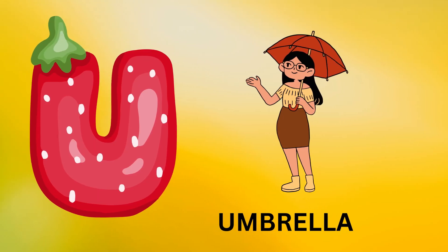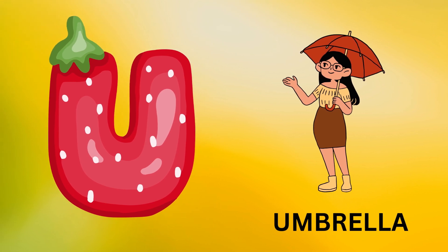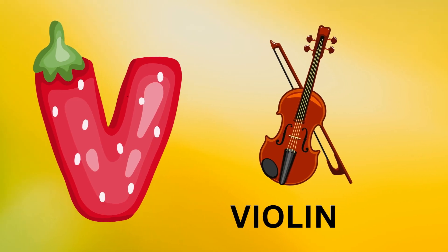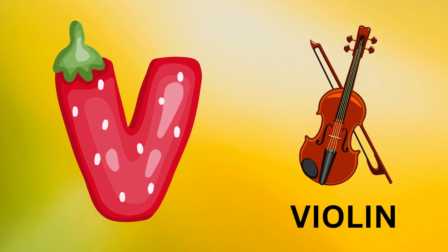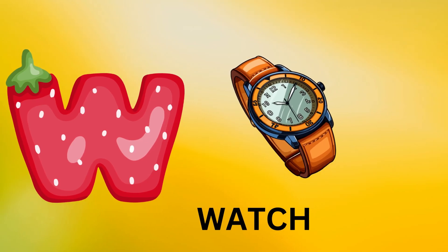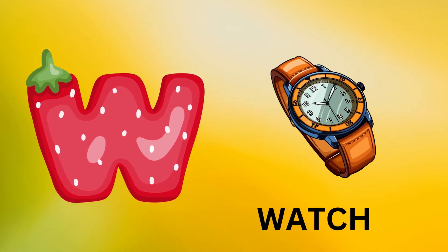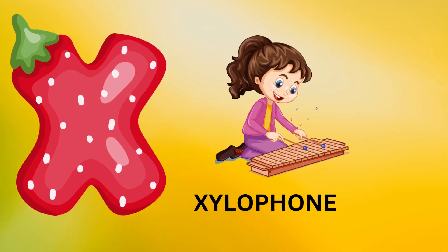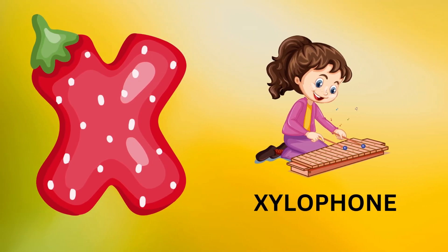U is for umbrella, u-u-umbrella. V is for violin, v-v-violin. W is for watch, w-w-watch. X is for xylophone, z-z-xylophone.